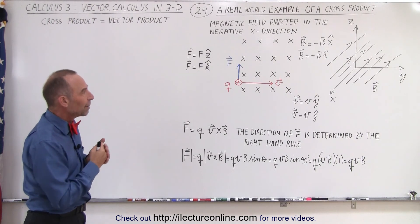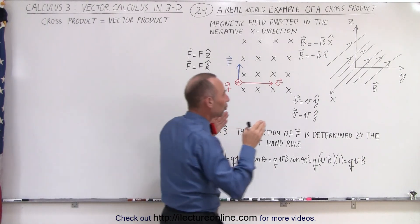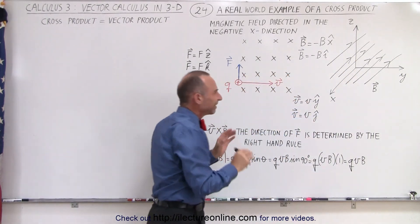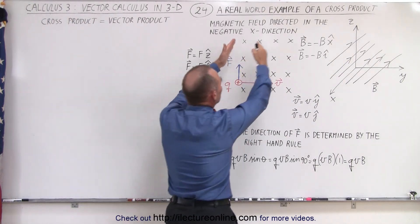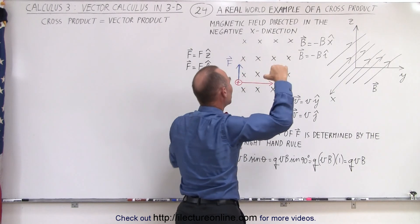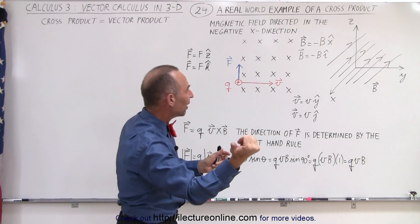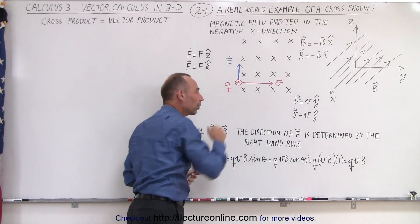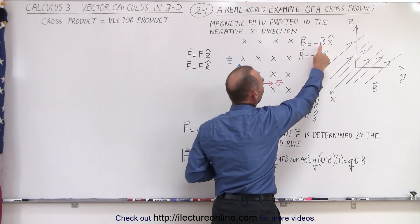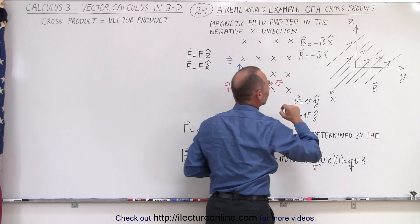In this real-world example, we're going to imagine that we have a magnetic field present which is directed into the negative x-direction, as we've drawn here. Here we have it redrawn, with the back of an arrow showing that the magnetic field is into the board. So in this direction that's the positive x-direction, and into the board is the negative x-direction. The magnetic field can be defined as the magnitude of the field times the negative x-direction, or the negative i-direction.